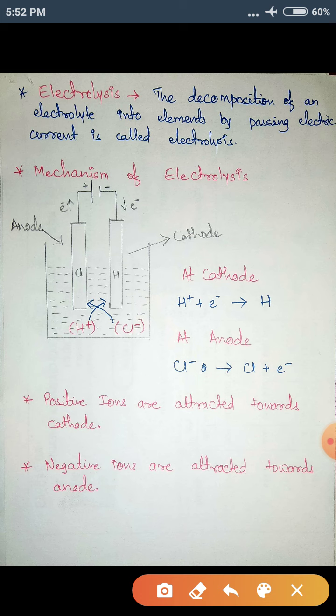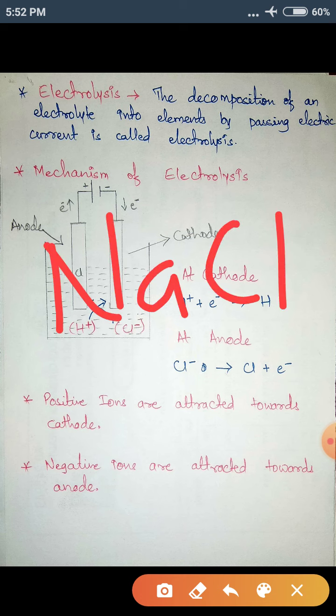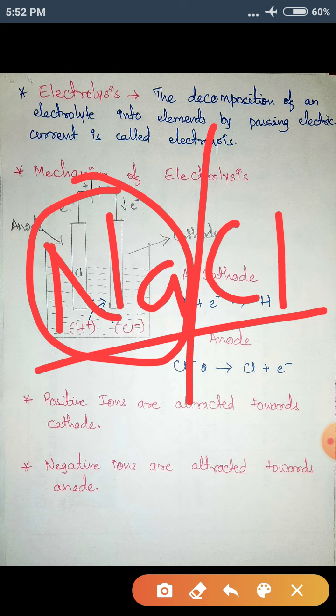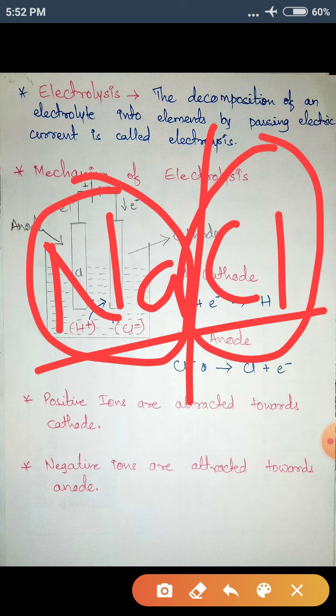I will take the example of an electrolyte, say NaCl. This is an electrolyte. I want to separate Na and Cl — this is the composition of NaCl. I want to separate sodium and I want to separate chlorine. This separation is done using electric current, and that process is called electrolysis.